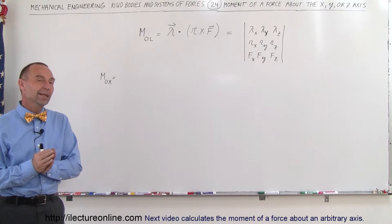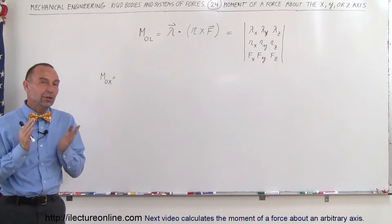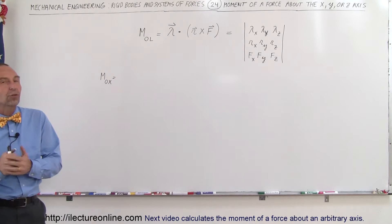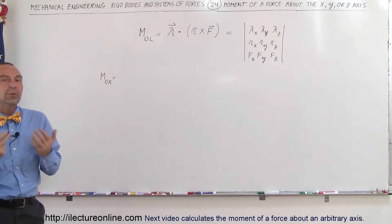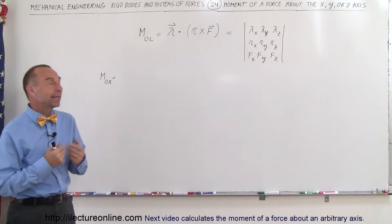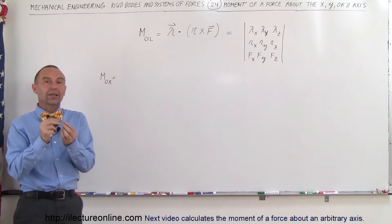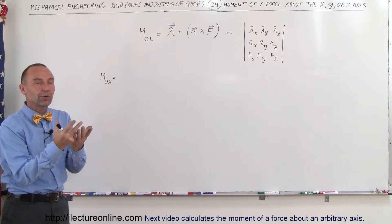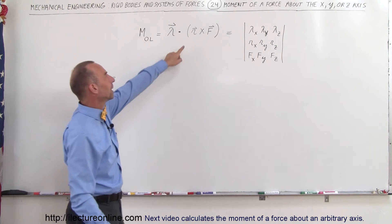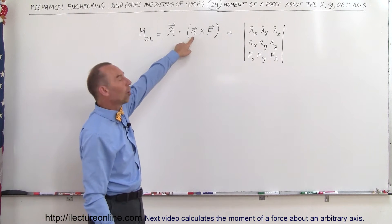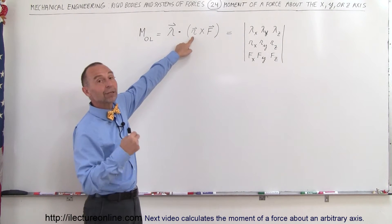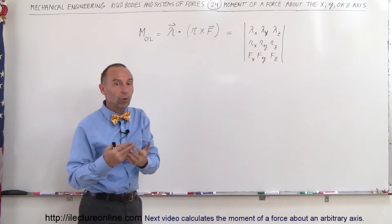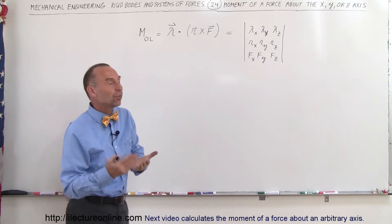Welcome to ElectronLine. Now let's take a look at the moment about either the X, the Y, or the Z axis. How do we calculate that? There is a force acting on a particle at some arbitrary point. That particle will be at a distance r away from the origin and it will be acted upon by some force that could be in any direction.